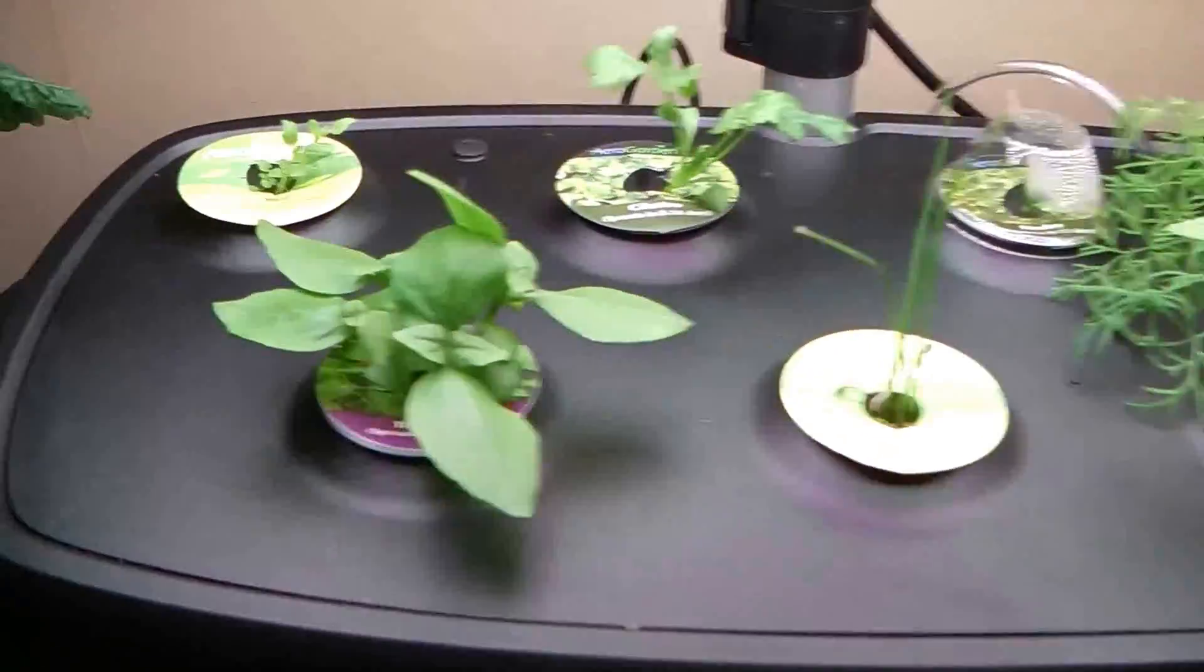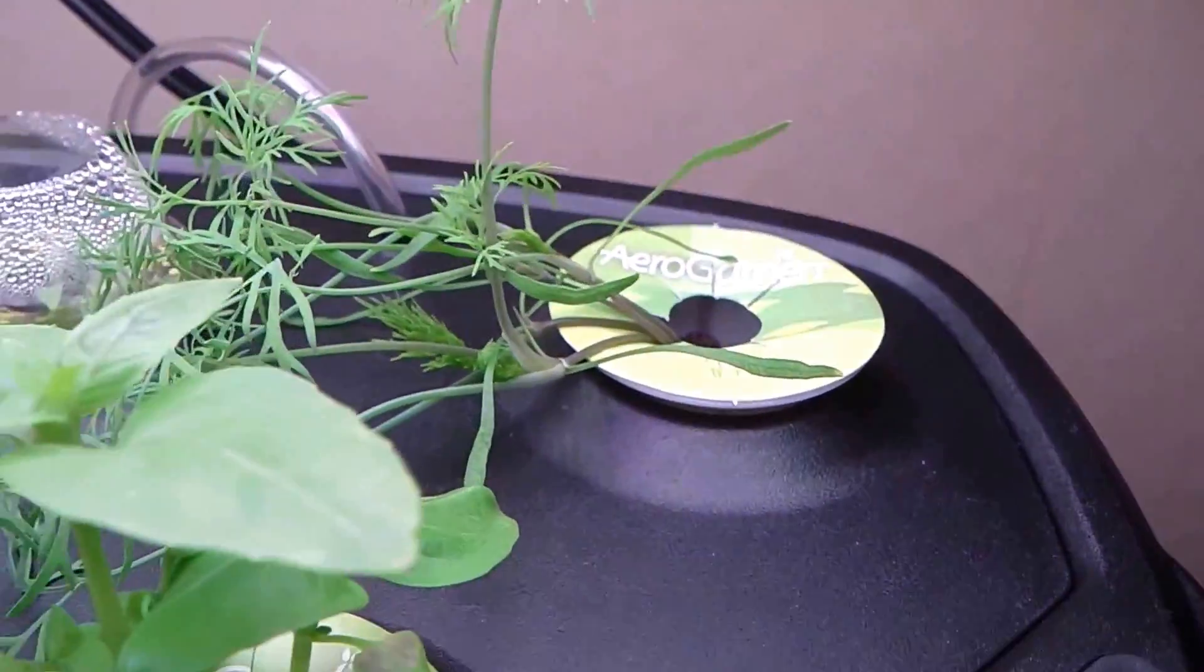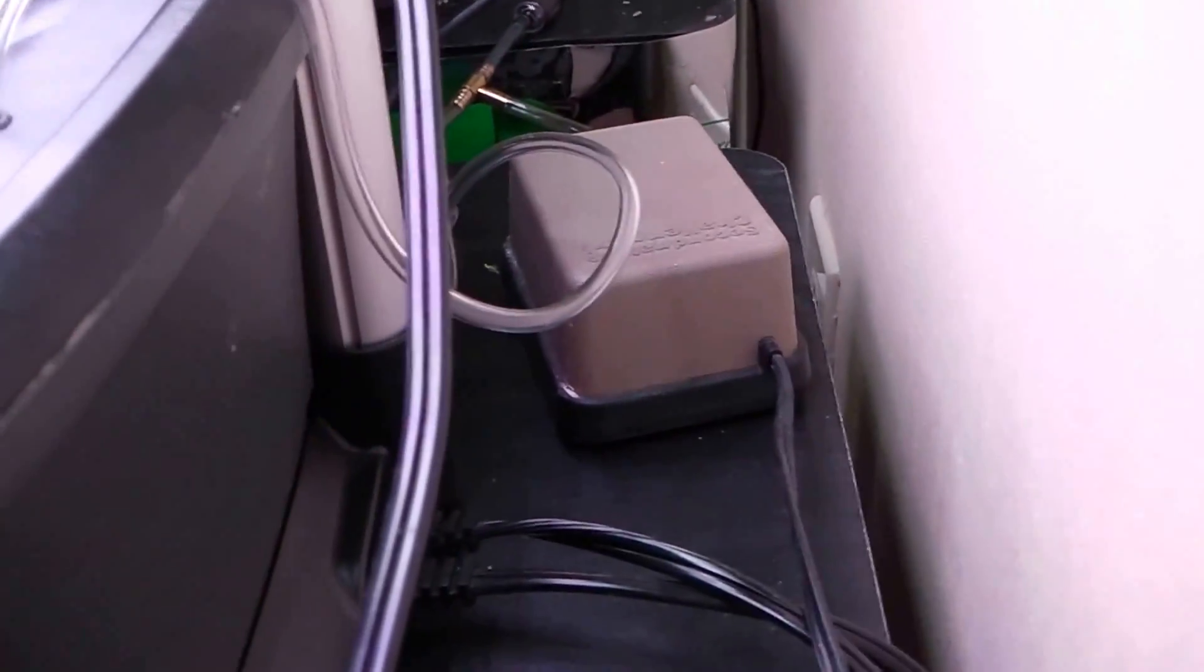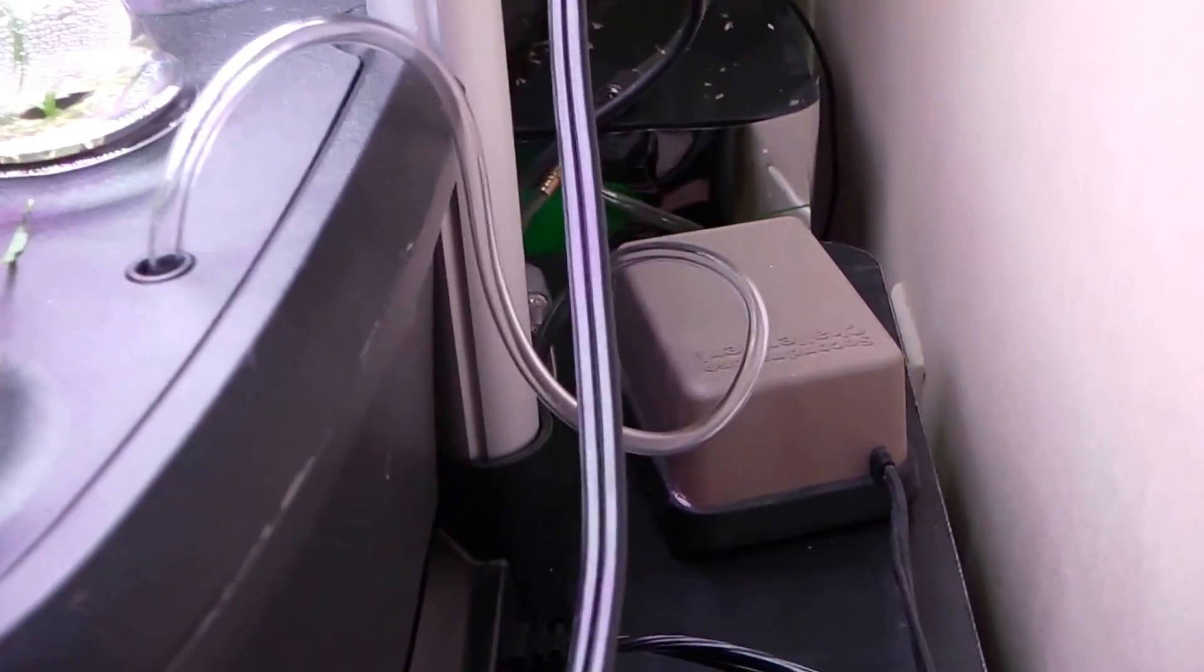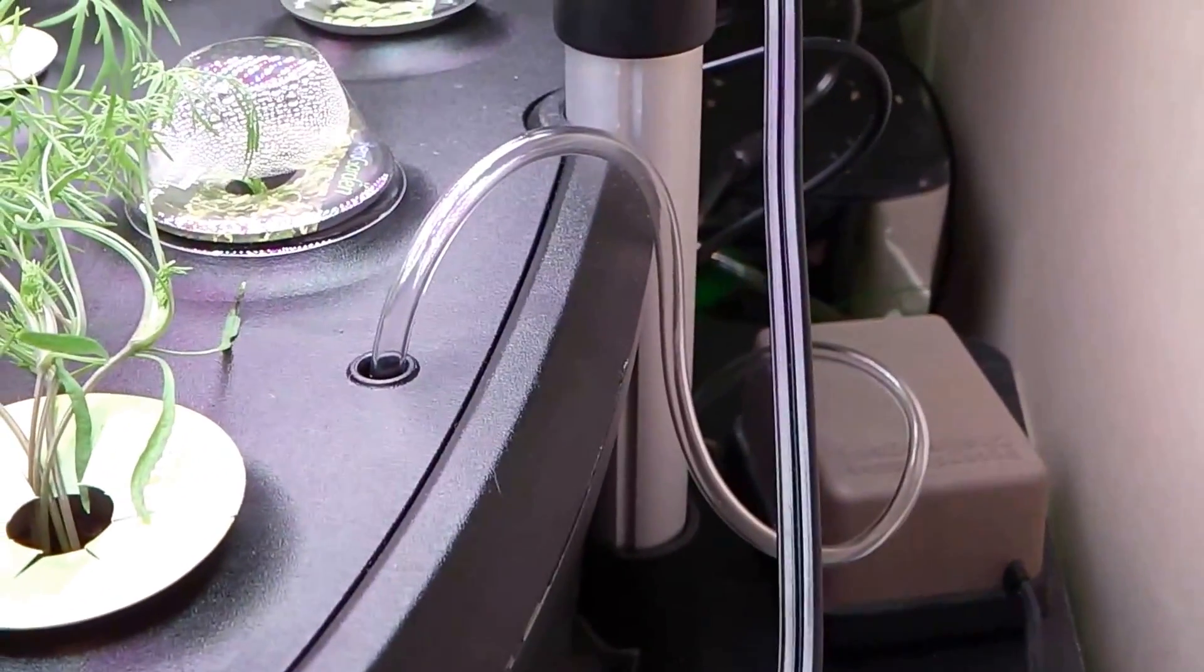Okay, so there you have it. We have the air lines going into the air line holes on both the AeroGarden Ultra LED and the AeroGarden Extra. And it's all running off of an air pump that we have behind the unit and split. And this one small air pump is actually putting out enough air for both units.